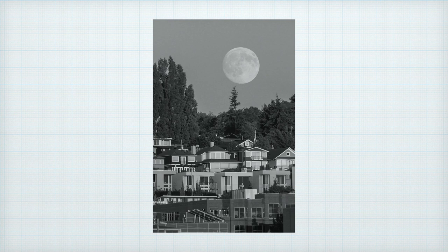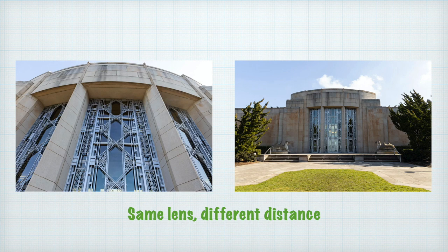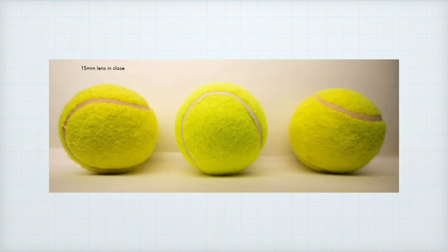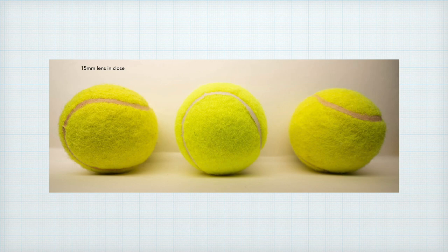Wide angle distortion — where things are stretched out at the ends of a photo — is perspective or viewpoint distortion: you are simply too close to your subject. Many issues with short lenses come down to working at the wrong camera-to-subject distance. What happens to people on the ends of a group photo made with a short lens is that the lens sees both the front and the sides of those folks on the ends and renders them stretched out. This only happens with 3D subjects, and the cure is to move back away from the group, then either crop in post-production or use a longer lens to fill the frame.